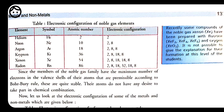Helium has atomic number 2, so its K shell has 2 electrons — complete. Neon has atomic number 10, with configuration 2, 8 — complete. Argon has atomic number 18, with configuration 2, 8, 8. Students, don't get confused — M shell can accommodate 18 electrons, but if it has 8 electrons in the outermost shell it is taken as the stable form. Krypton has atomic number 36, configuration 2, 8, 18, 8.